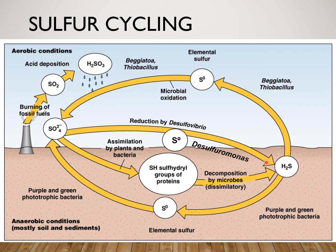One is in the presence of Oxygen — we call it aerobic oxidation of Hydrogen Sulphide. The second involves another group of microorganisms which carry out the oxidation of Hydrogen Sulphide under anaerobic conditions. The purple and green phototrophic bacteria play an important role in the conversion of Hydrogen Sulphide into Sulphur, whereas in the presence of Oxygen, Beggiatoa and Thiobacillus are the two organisms mainly involved in oxidation of Hydrogen Sulphide.